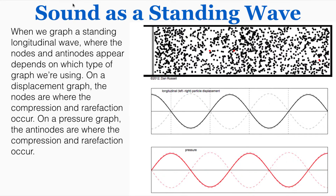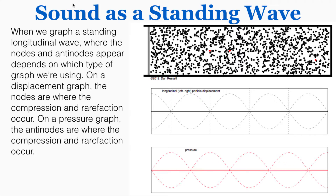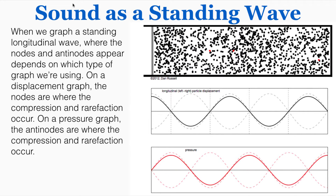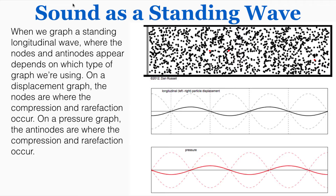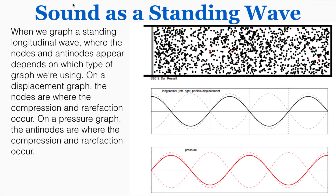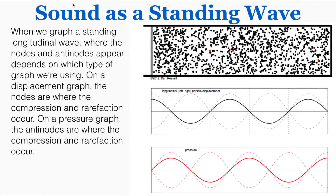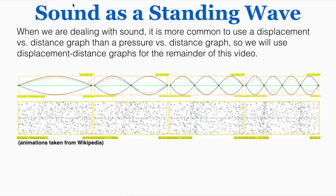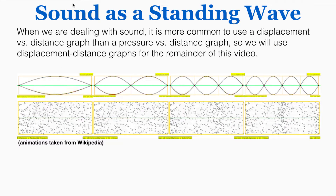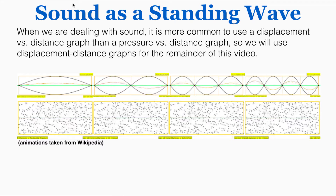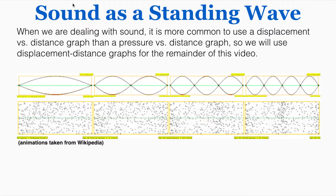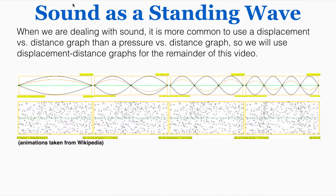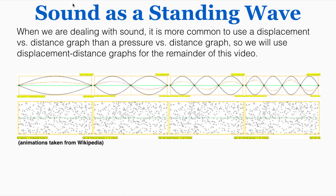On a graph of the pressure of the air, the antinodes are where the compression and rarefaction occur. So even though those particles aren't moving, that's where they feel the most or least air pressure from the other particles. When we're dealing with sound, it's more common to use a displacement versus distance graph than a pressure versus distance graph, so we'll use displacement-distance graphs for the remainder of this video.